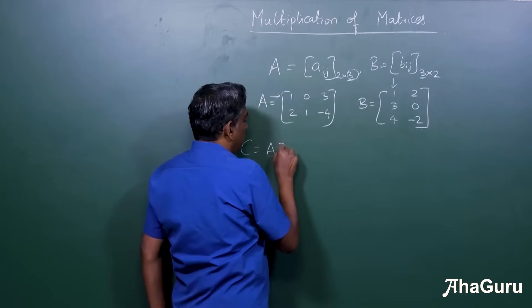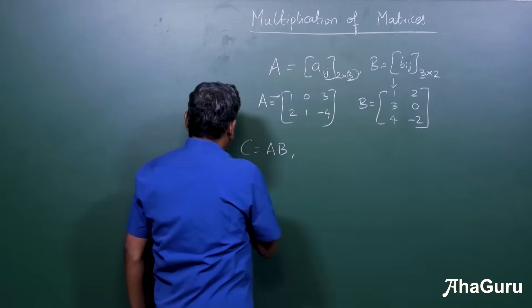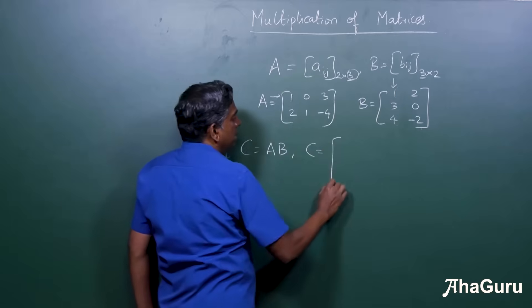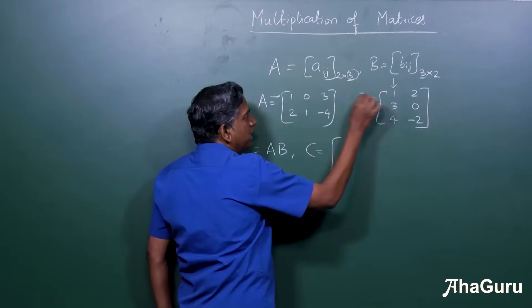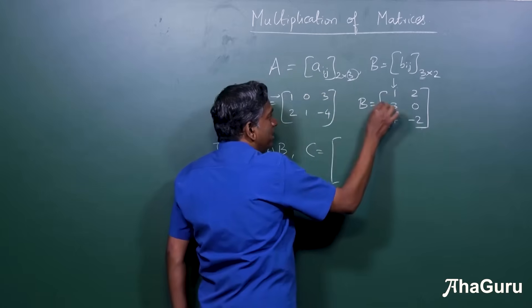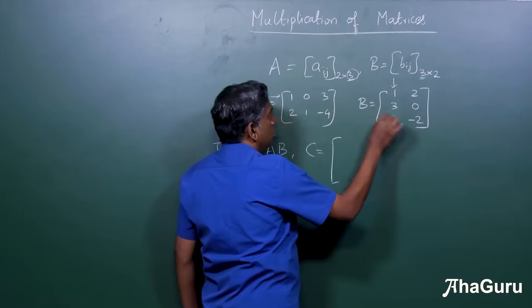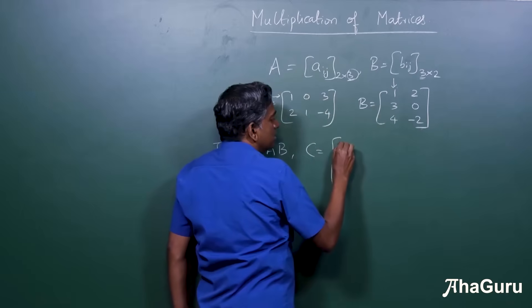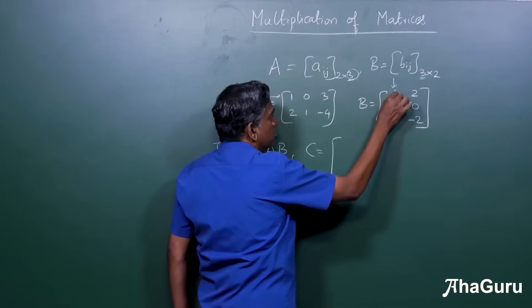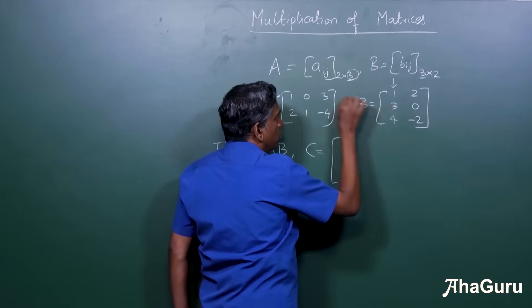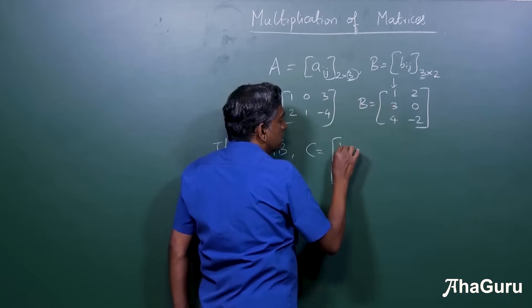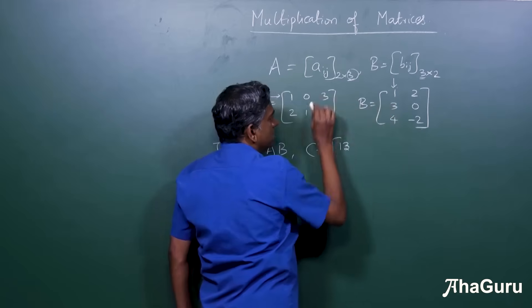So if I say C is equal to AB, then C will be equal to 1 into 1 plus 0 into 3 plus 3 into 4. So 1 into 1 is 1, 0 into 3 is 0, 3 into 4 is 12, 12 plus 1 is 13.